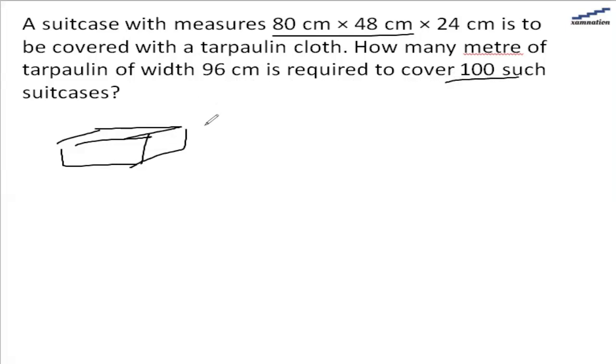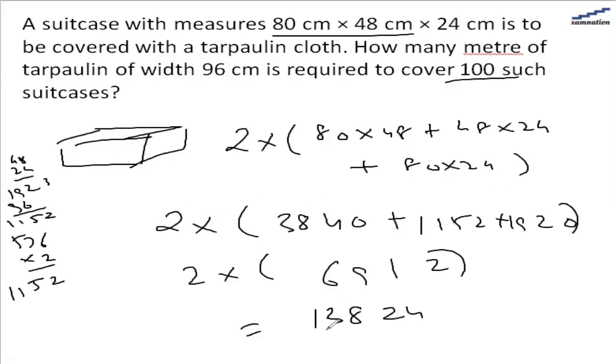Let's find the surface area of one suitcase. That would be 2 × (80 × 48 + 48 × 24 + 80 × 24), which equals 13,824 cm². We need to find this for 100 such suitcases, so the total area will be...